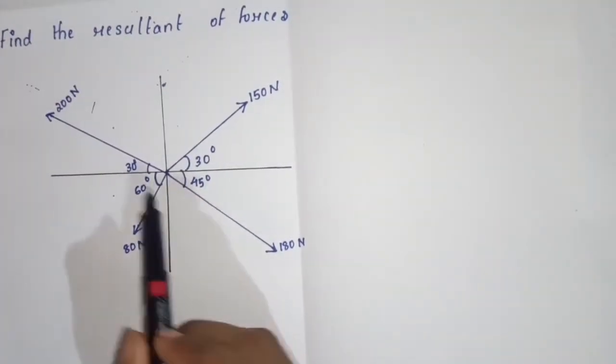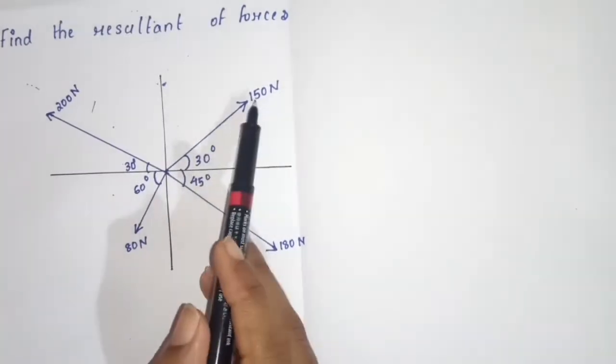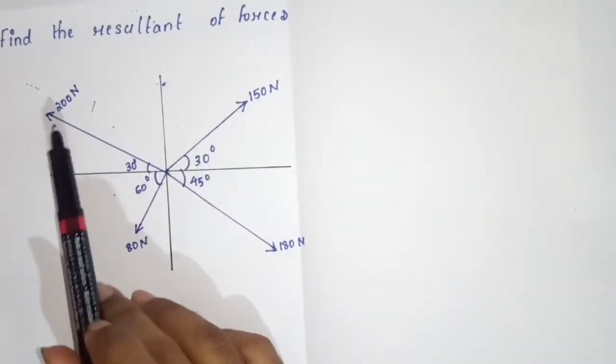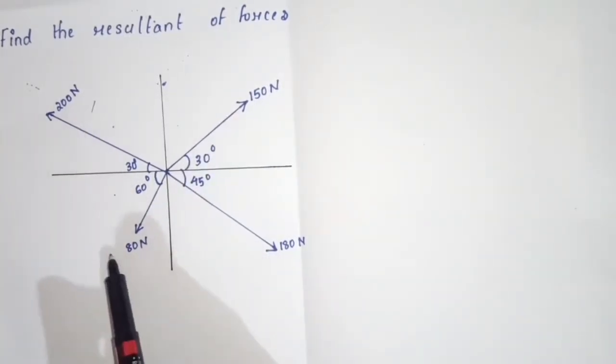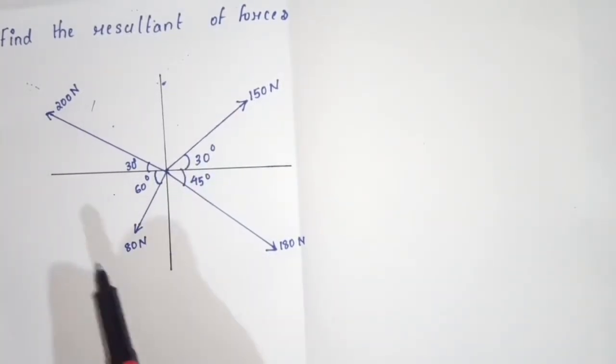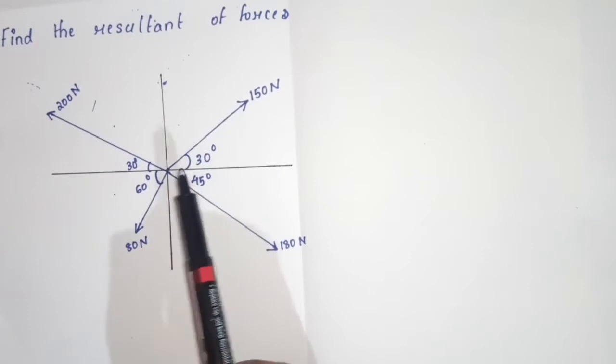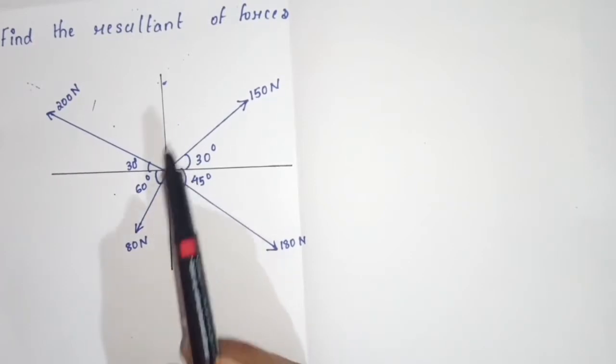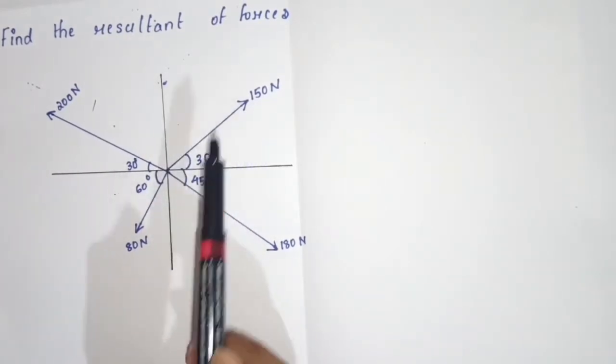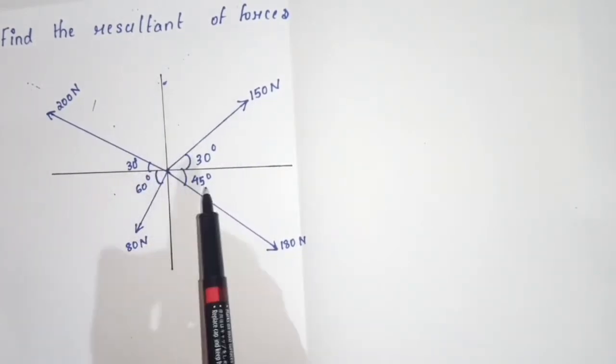We have 4 forces: 150N, 200N, 80N, and 180N. What is the resultant of these 4 forces?